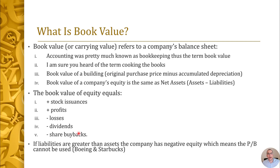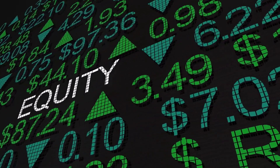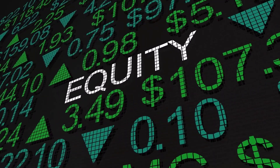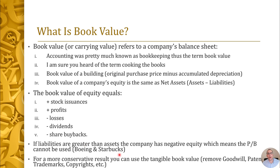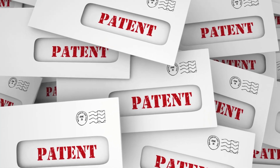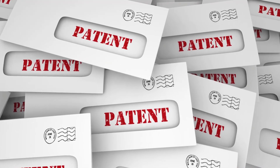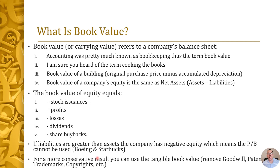The reason equity goes down when you buy back stock is because the company uses cash to purchase the stock. On the flip side, you can inflate equity by issuing lots and lots of stock — so if a company has high equity because they keep issuing stock and diluting shareholders, that could be a bad thing. If you want to do a more conservative price-to-book calculation, you can strip out intangible assets and just calculate the tangible book value — removing goodwill, patents, trademarks, copyrights, etc.